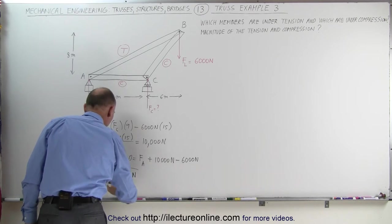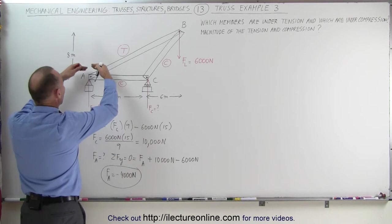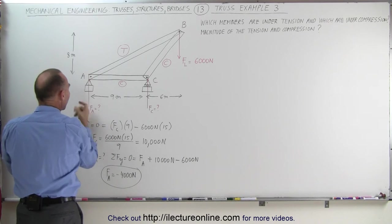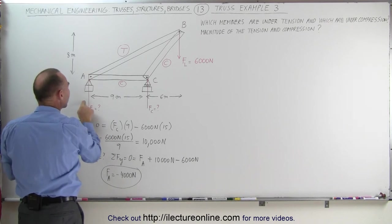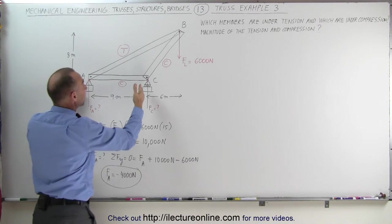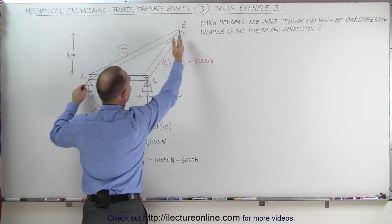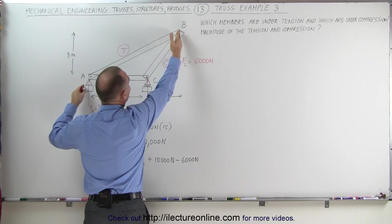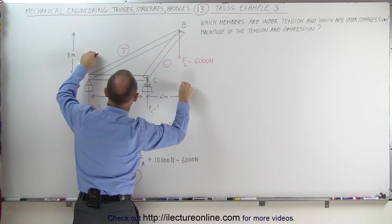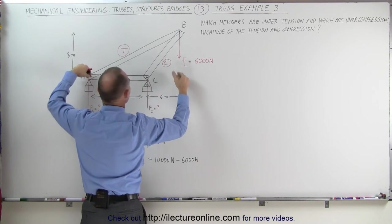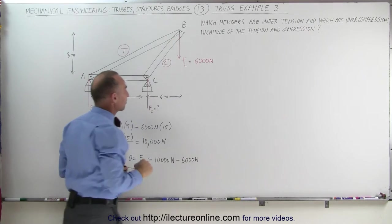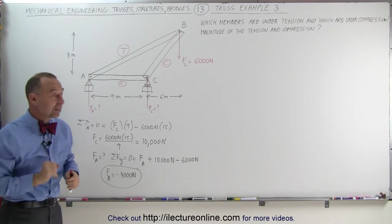In other words, the structure is not resting on F sub A — it actually has to be held down by a force equal to 4,000 Newtons, which makes a lot of sense. Based on the geometry, if this were the only force acting in this direction, this would simply tip over the truss. So it must be held down to balance the 6,000 Newton load.